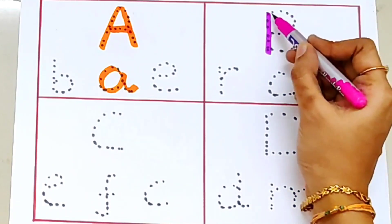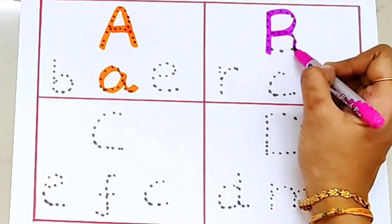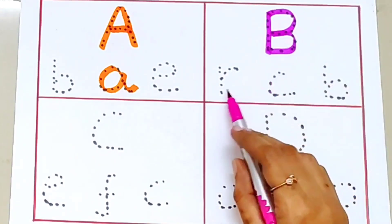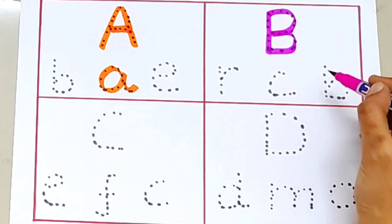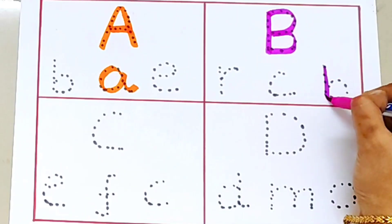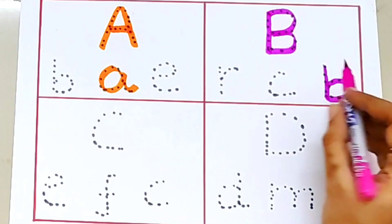Capital B. B for ball. Let's find small b. Small b. Capital B.